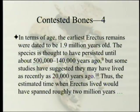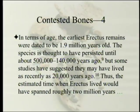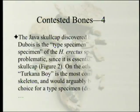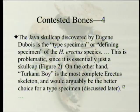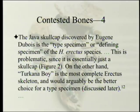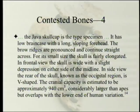In terms of age, the earliest erectus remains were dated to 1.9 million years old. This species is thought to have persisted until about 500,000 to 140,000 years ago, but some studies suggest they may have lived as recently as 20,000 years old. Thus the estimated time when erectus lived would have spanned roughly 2 million years. The Java skull cap discovered by Dubois is the type specimen of the Homo erectus species, which is problematic since it is essentially just a skull cap. Turkana Boy would arguably be the better choice for a type specimen, but the type specimen is always the first one found.